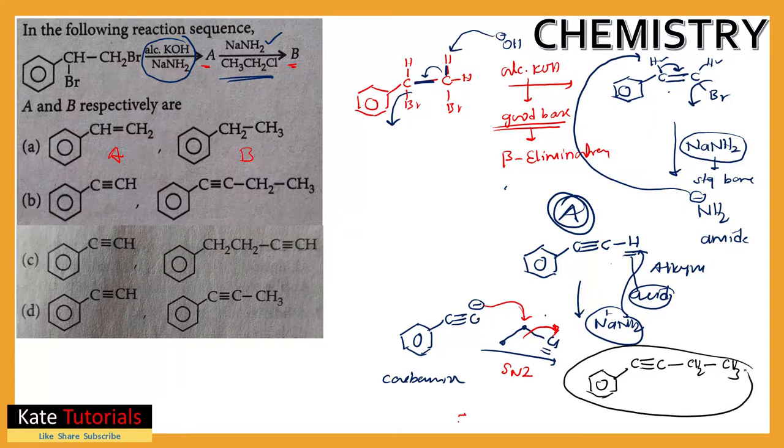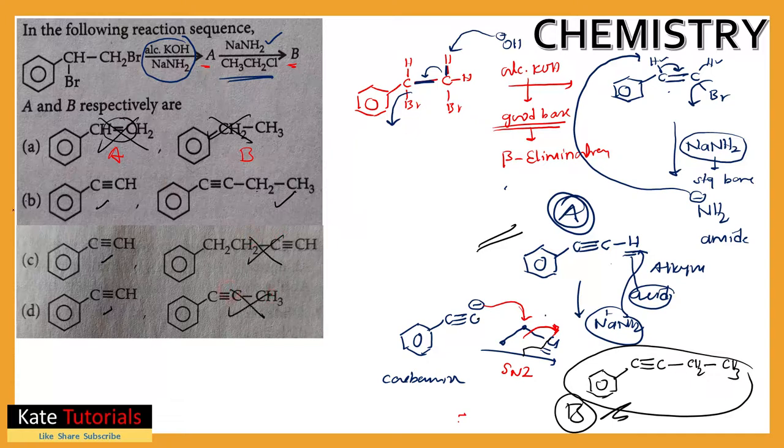So A I got benzene ring having next carbon triple bond, and B product is this one. Let us see: option A if you see, we get alkene - this is wrong. Coming to B, yeah this is true, this is true about A. Let us see about B: C triple bond C CH2CH3. So this is the correct answer. This is wrong and this is wrong, so option B is the correct one.